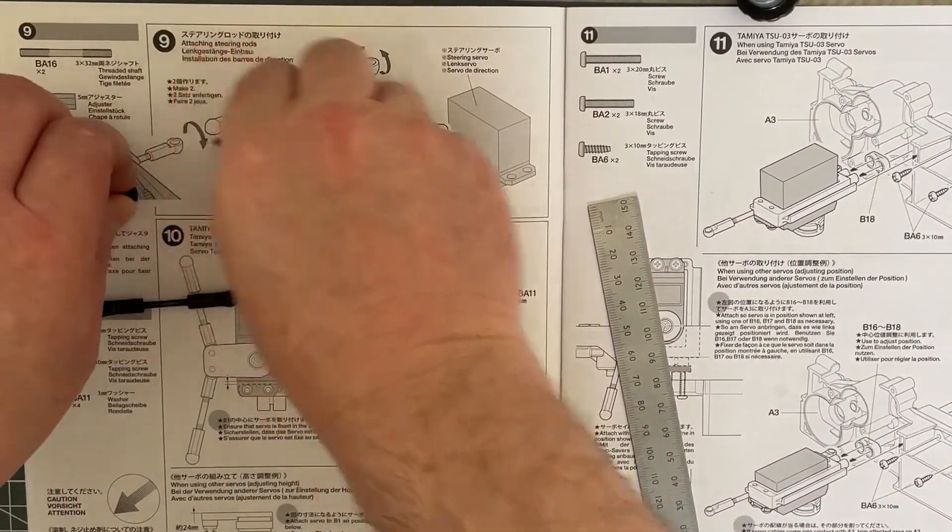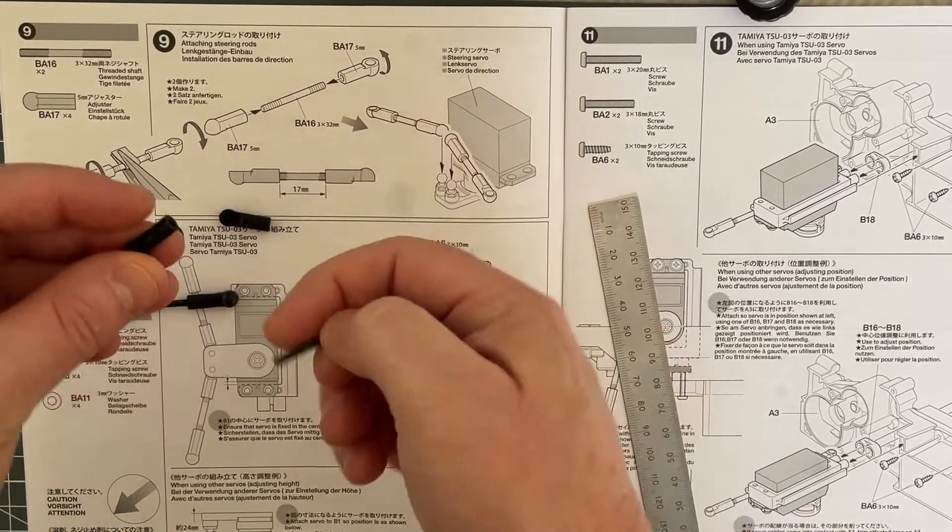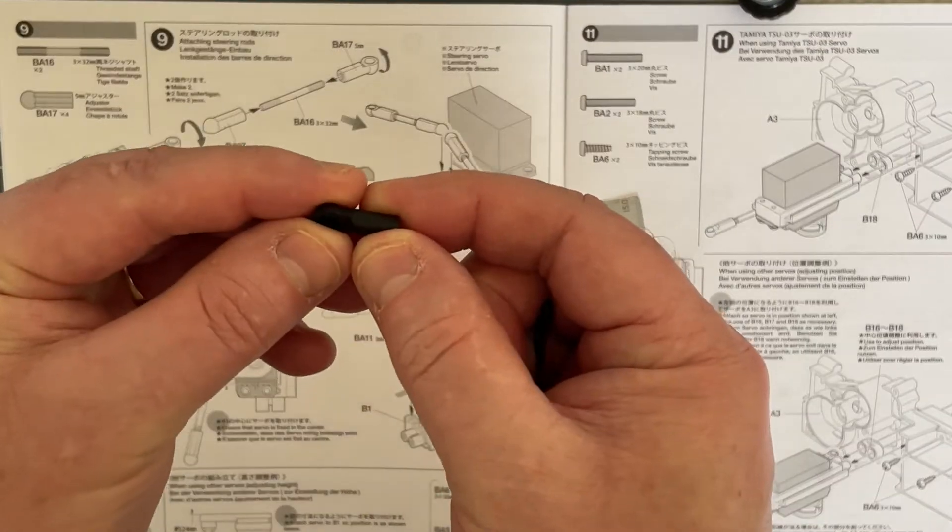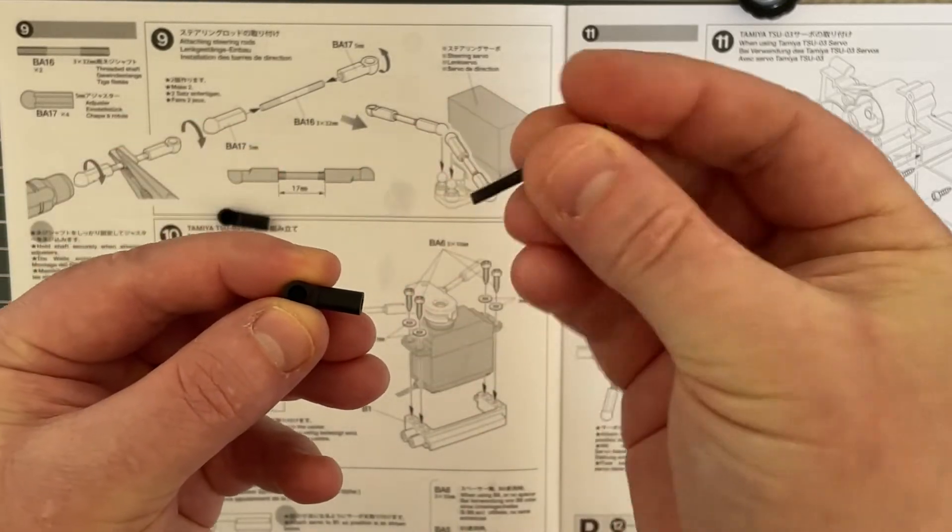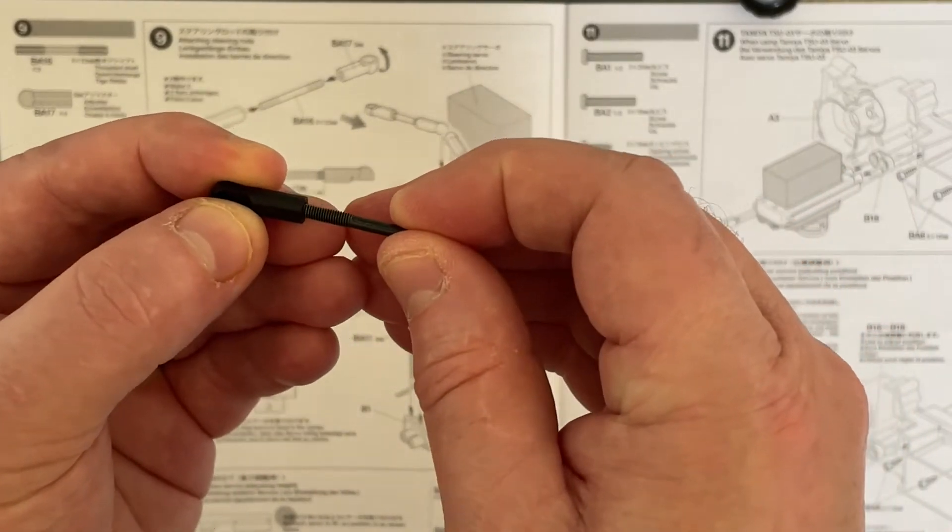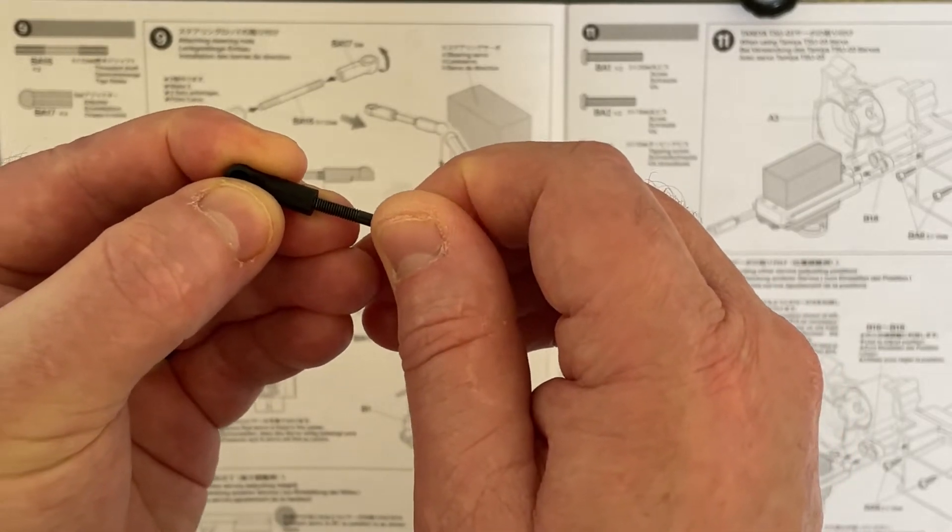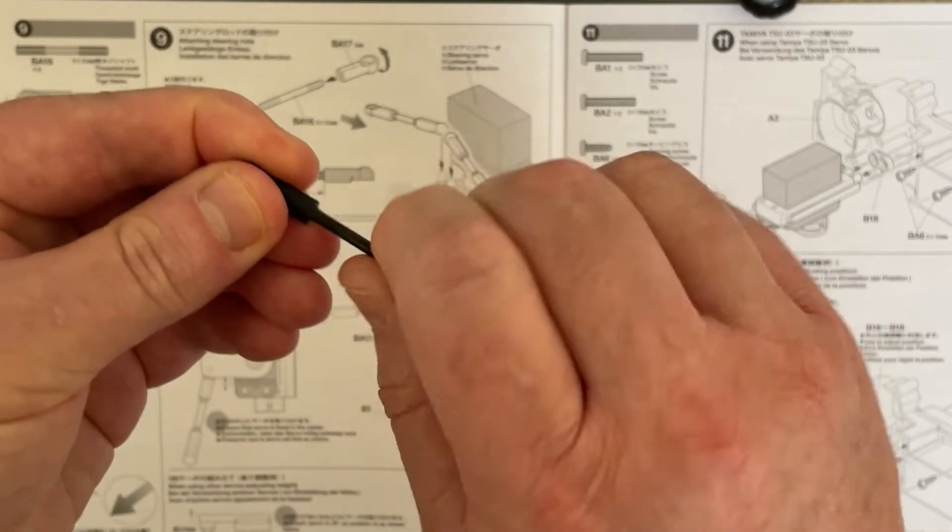For step 9, we have these components: the BA17, which is this little guy here, and the BA16, which is our 3-millimeter rod. We need to put this into here and get some threads on it so that it winds through.